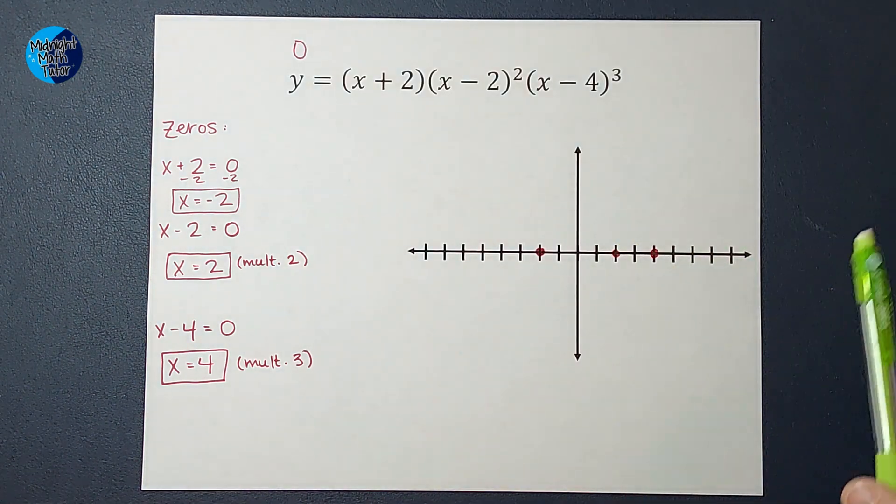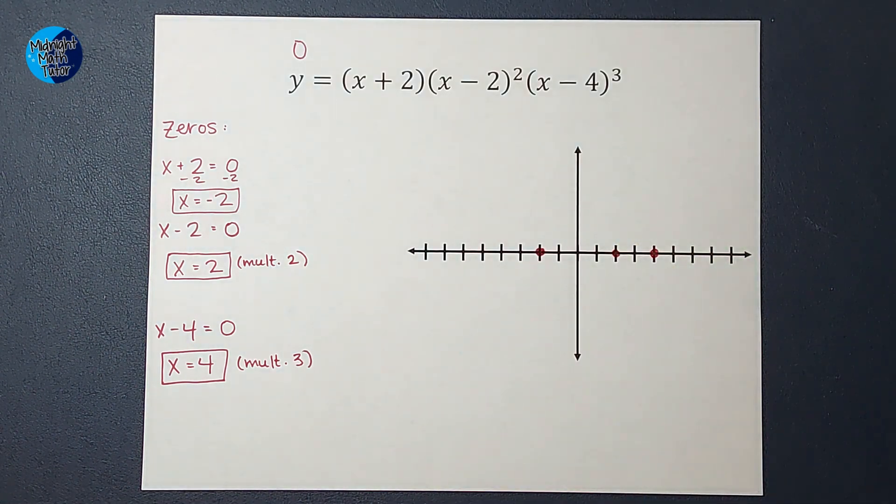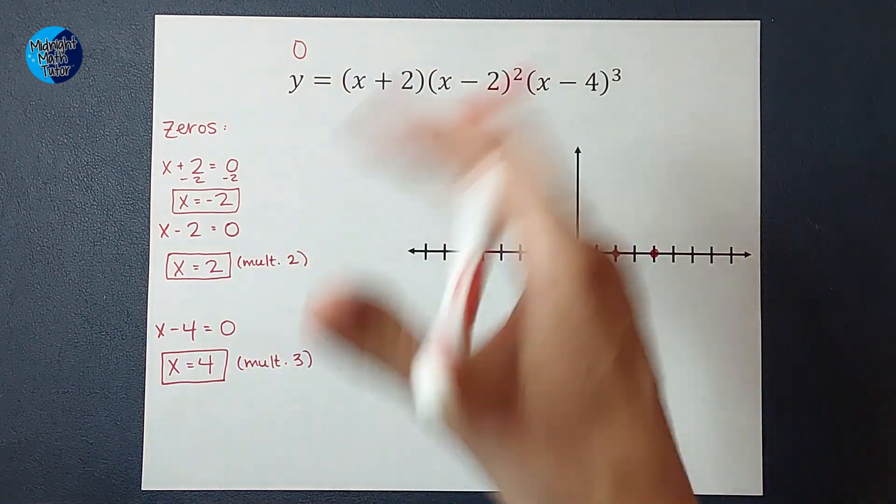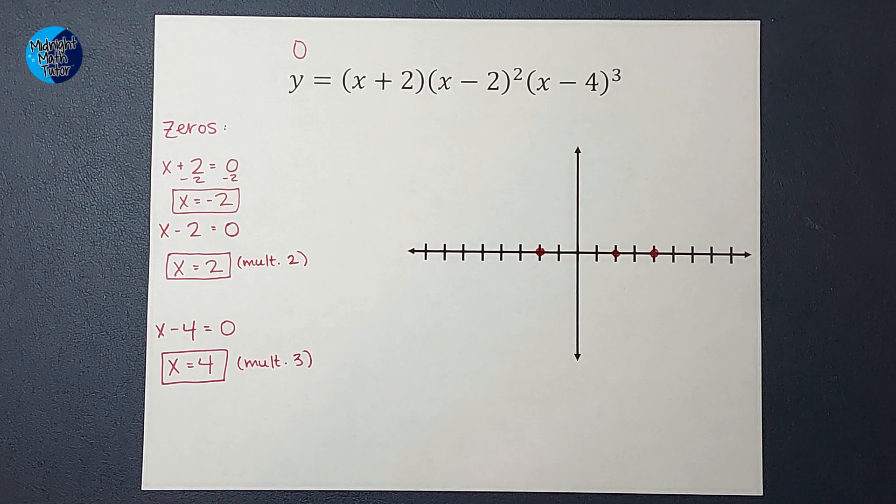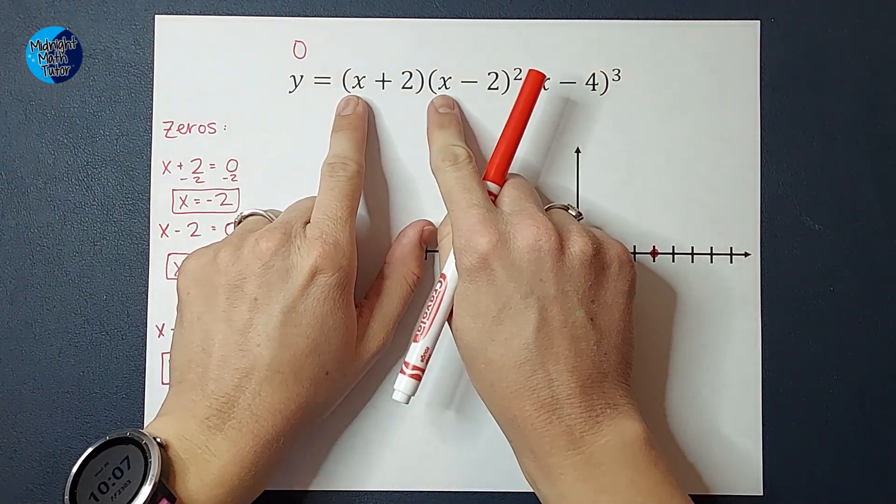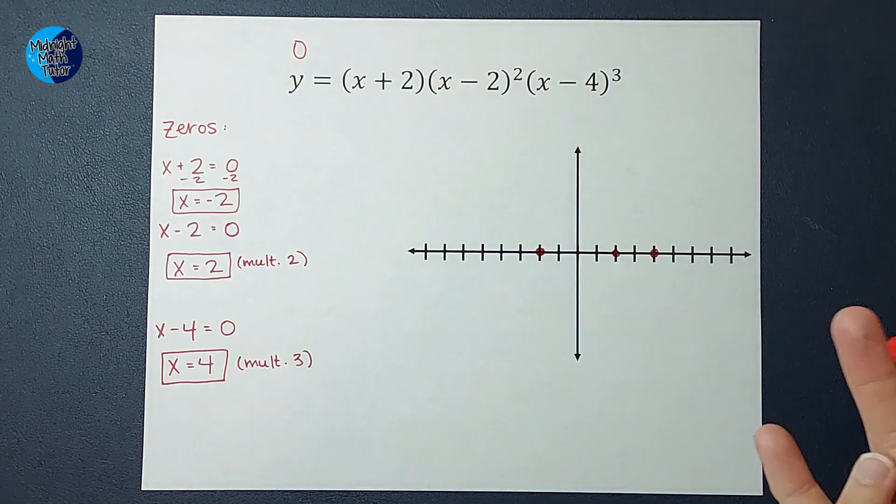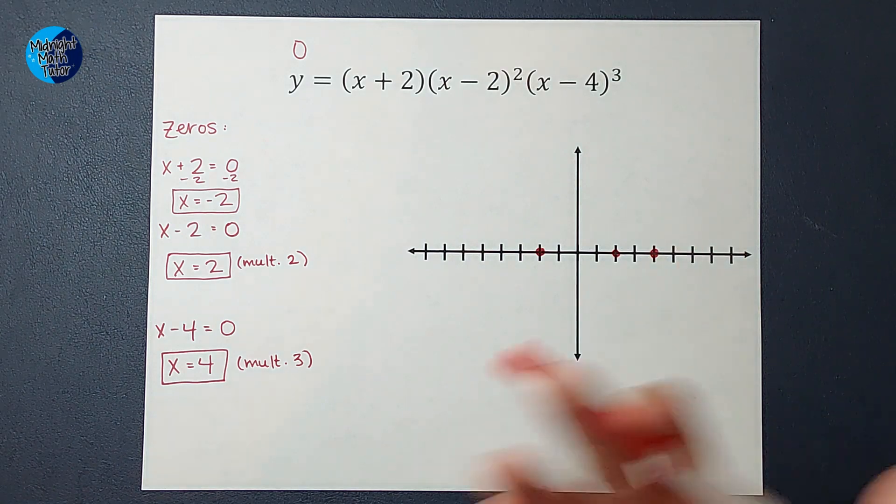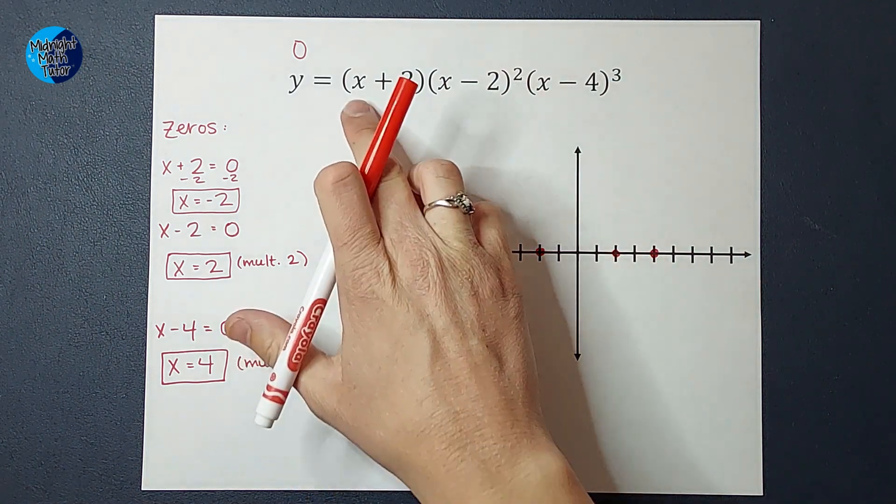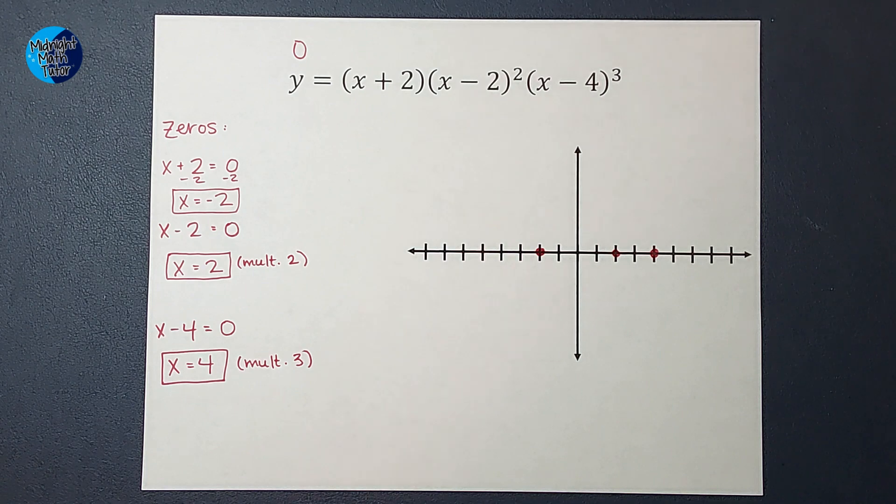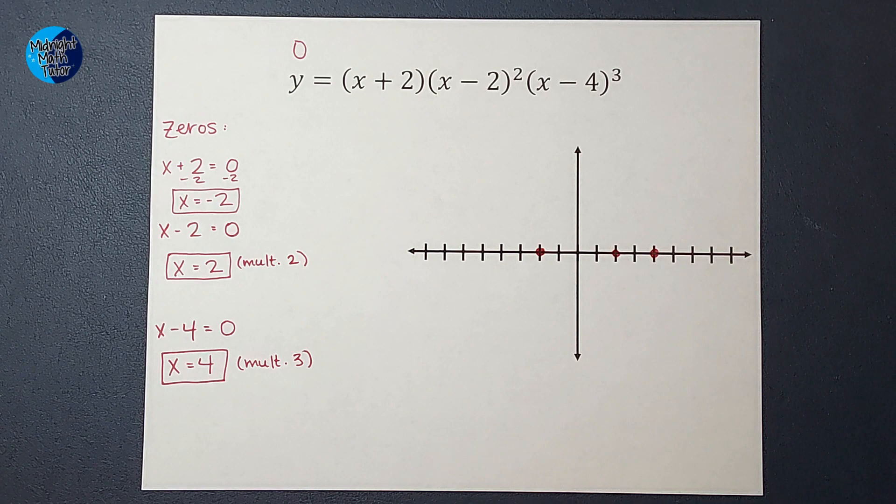So from here, we start with the right side. And for that, we're going to look at our leading coefficient. If there were, right now, my leading coefficient is just really a one. But if there were numbers in front of these x's, I would need to multiply it all out to see what my leading coefficient was. But since they're all just x's, my leading coefficient is a one. But all I really care about is if it's positive or negative.